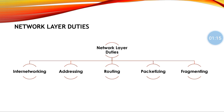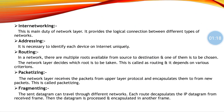These are some of the network layer duties. Internetworking is the connection of different types of networks — for example, a Wi-Fi private network connected to the internet, which is a public network. Connecting private and public networks is known as internetworking, and that is done by the network layer. Addressing — as we hear the name, IPv4 address comes to mind, which is a numerical label assigned to each device connected to the internet.